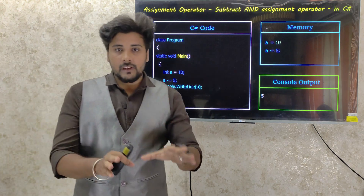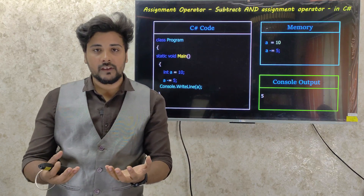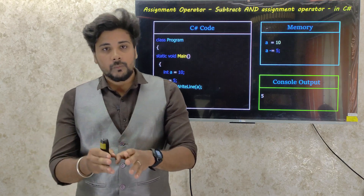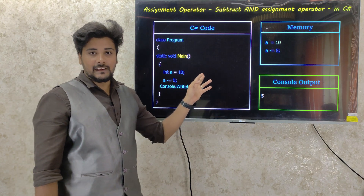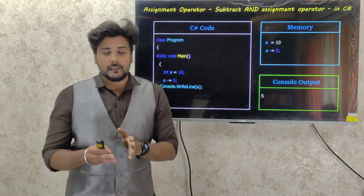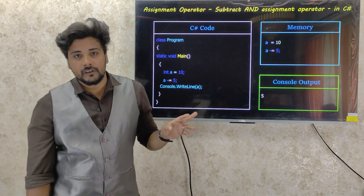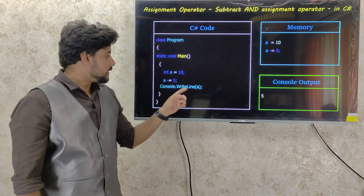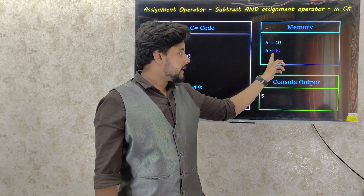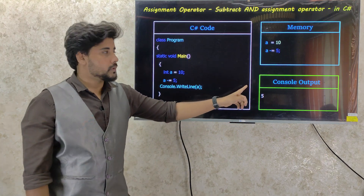We want to assign an integer another value. We assign the variables where the conditions are the same. We take the value and assign our variables. Here, `a` is equal to 10 — one variable declared and initialized. The condition is `a -= 5`, so the operation is 10 minus 5, which gives us 5 stored into `a` in memory space.